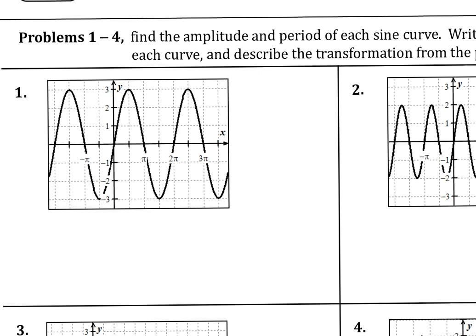First off, the amplitude: look at your highest point, which is up here at 3, and your lowest point, which is down here at negative 3. Remember, the amplitude is going to be one half times the absolute value of the max minus the min — that's one half times the absolute value of 3 minus negative 3, which is one half times 6, giving us 3. Our midline is right along this axis, and the amplitude is the distance from the midline up to the max value.